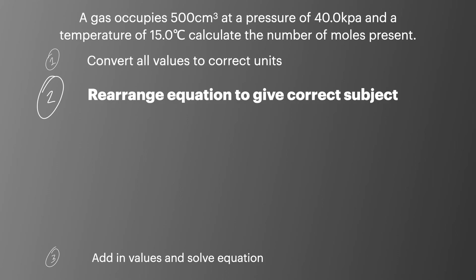Next, I'll rearrange the equation to give the correct subject. So I'll start off by writing out our equation PV equals nRT. And then the rearranged form n equals PV over RT.